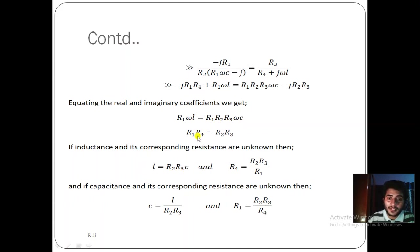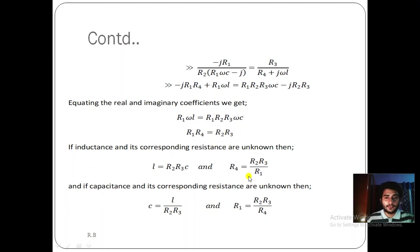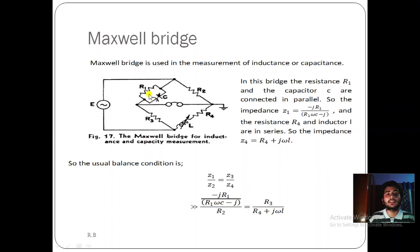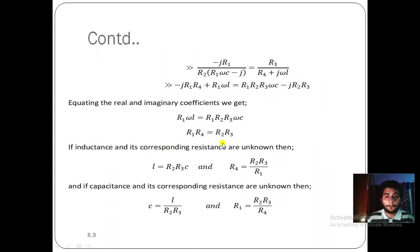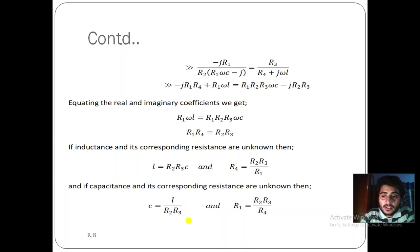This Maxwell bridge is used for the calculation of inductance or capacitance. If the inductance L and R4 are unknown, we determine them as: L = R2R3C and R4 = R2R3/R1. Conversely, if capacitance C and its corresponding resistance R1 are unknown, we find C = L/(R2R3) and R1 = R2R3/R4. In this way we can calculate impedance and capacitance using the Maxwell bridge.